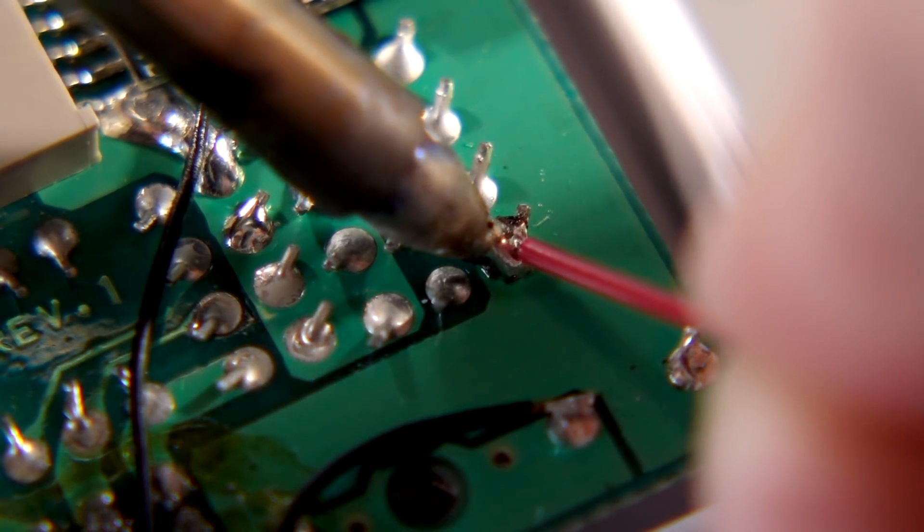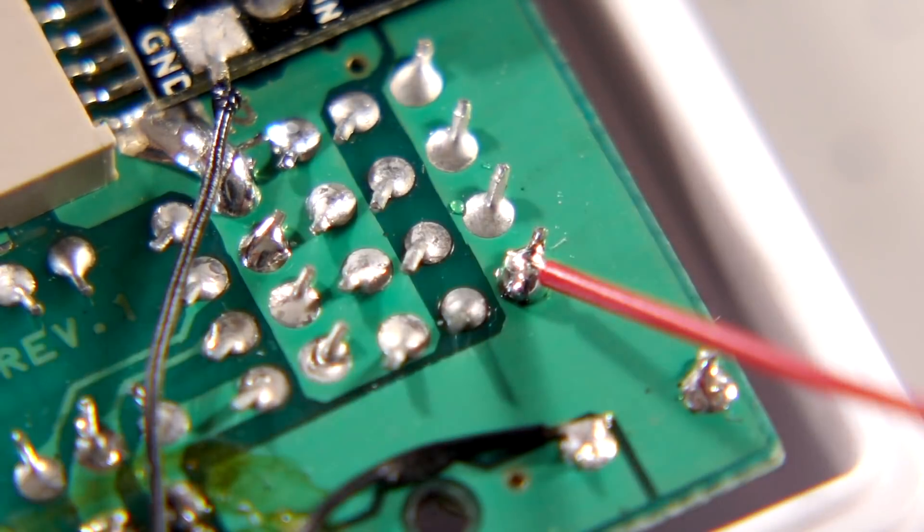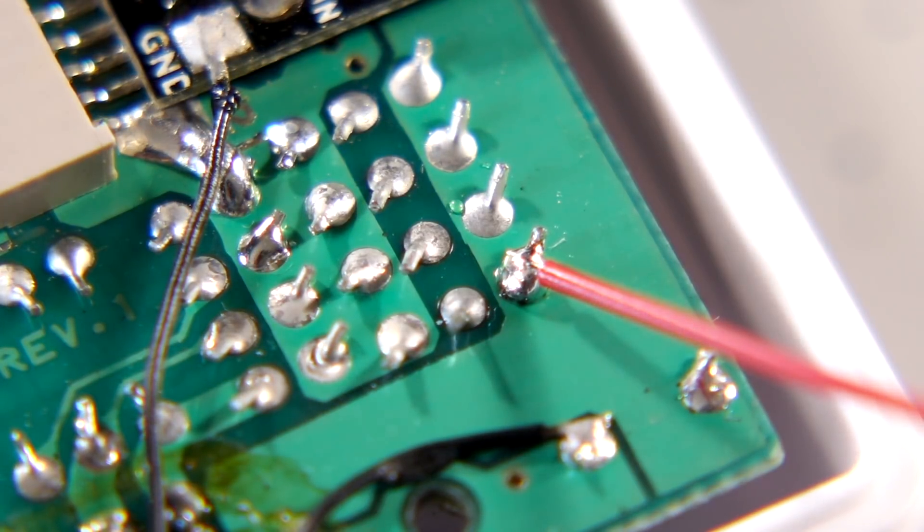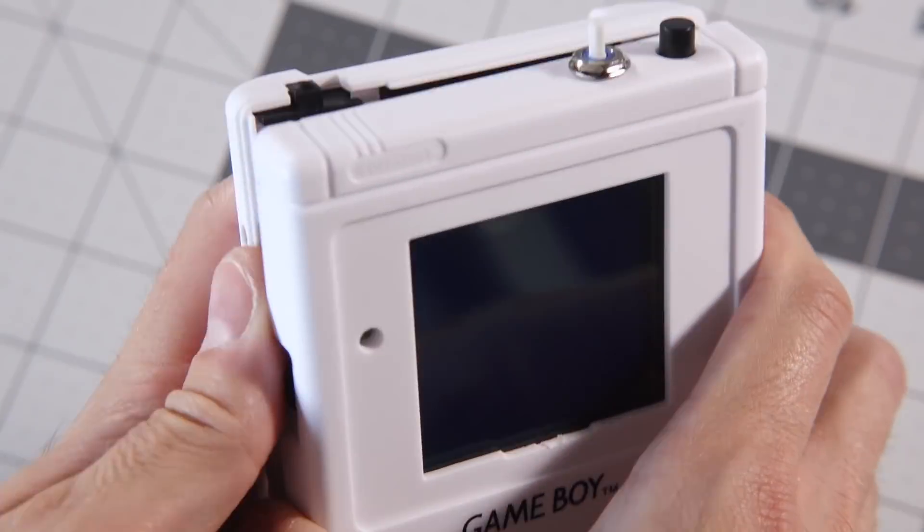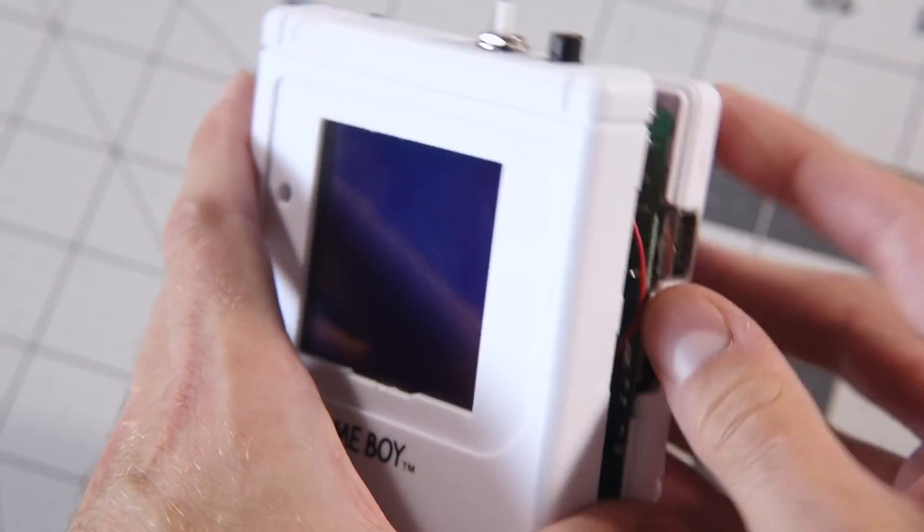Finally, the power wire, labeled VCC, goes to this 5V pin in the upper right corner. All that was left was to reconnect the ribbon cable, tuck in any stray wires, and close up the console.